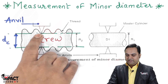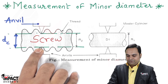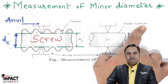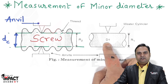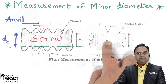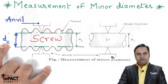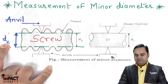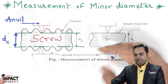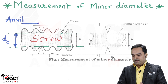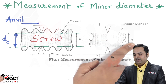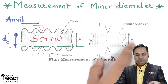At first, we are going to use a master cylinder. This master cylinder is a standard piece having a known diameter D1, which would be very close to the diameter we want to measure — that is D suffix C. D1 would be adjusted in the micrometer anvil and floating carriage micrometer, and we take the reading, indicated as R1.